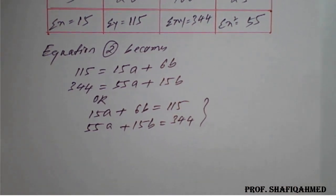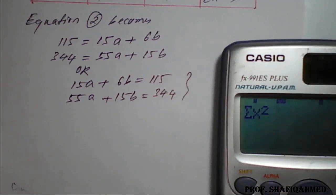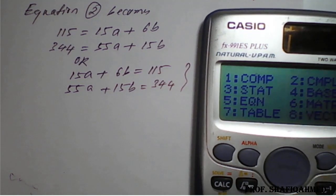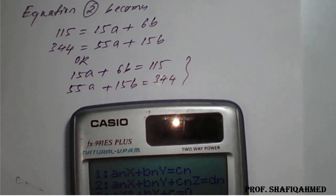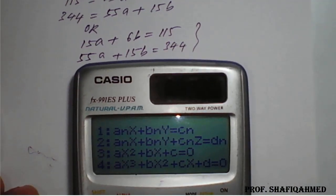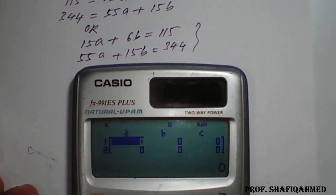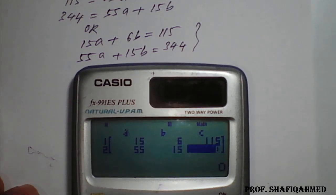So these equations we will solve in the calculator. Equation 1, then apply the values here: 15, 6, and then 115. Then second equation is 55, 15, and 344.